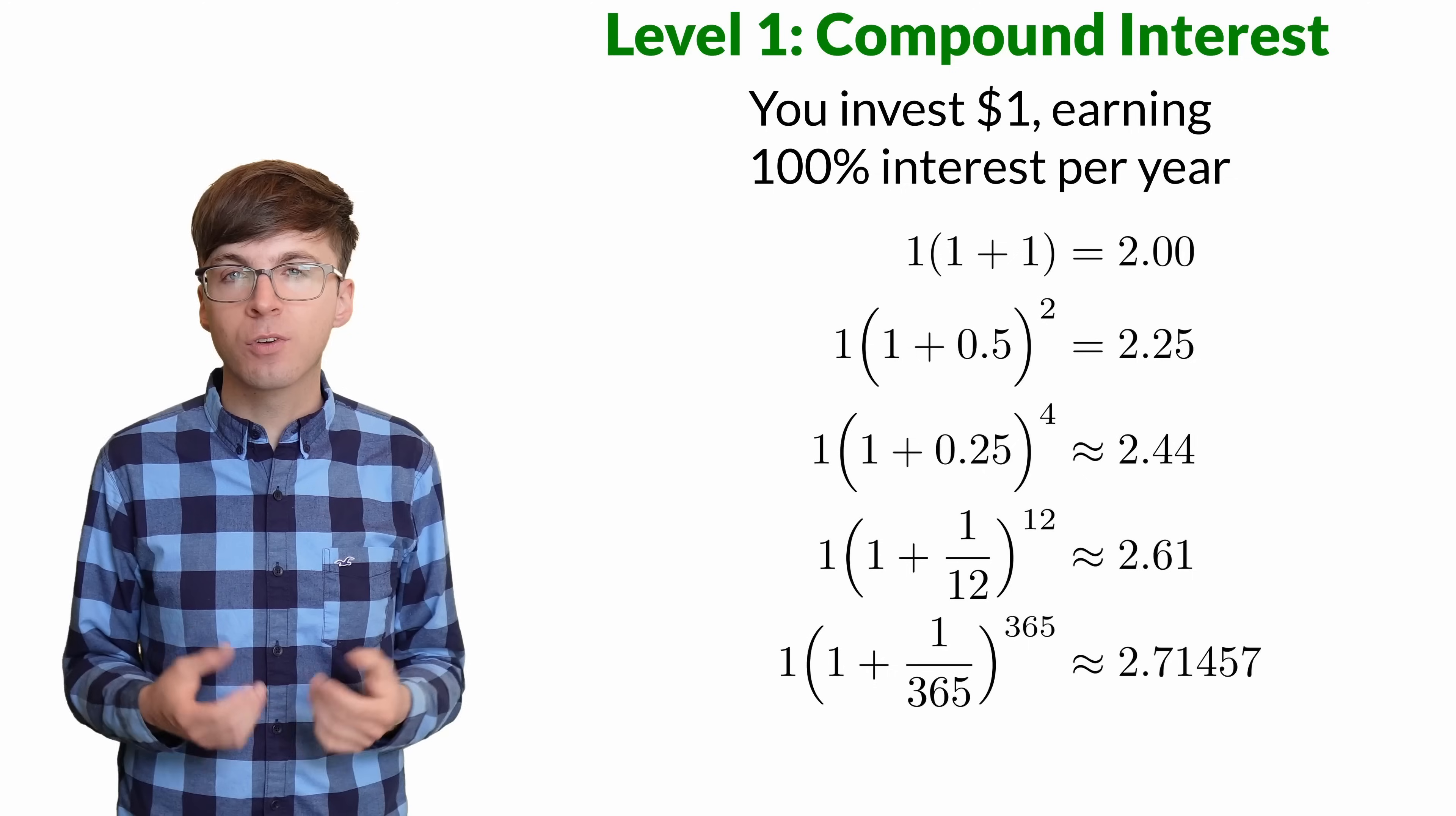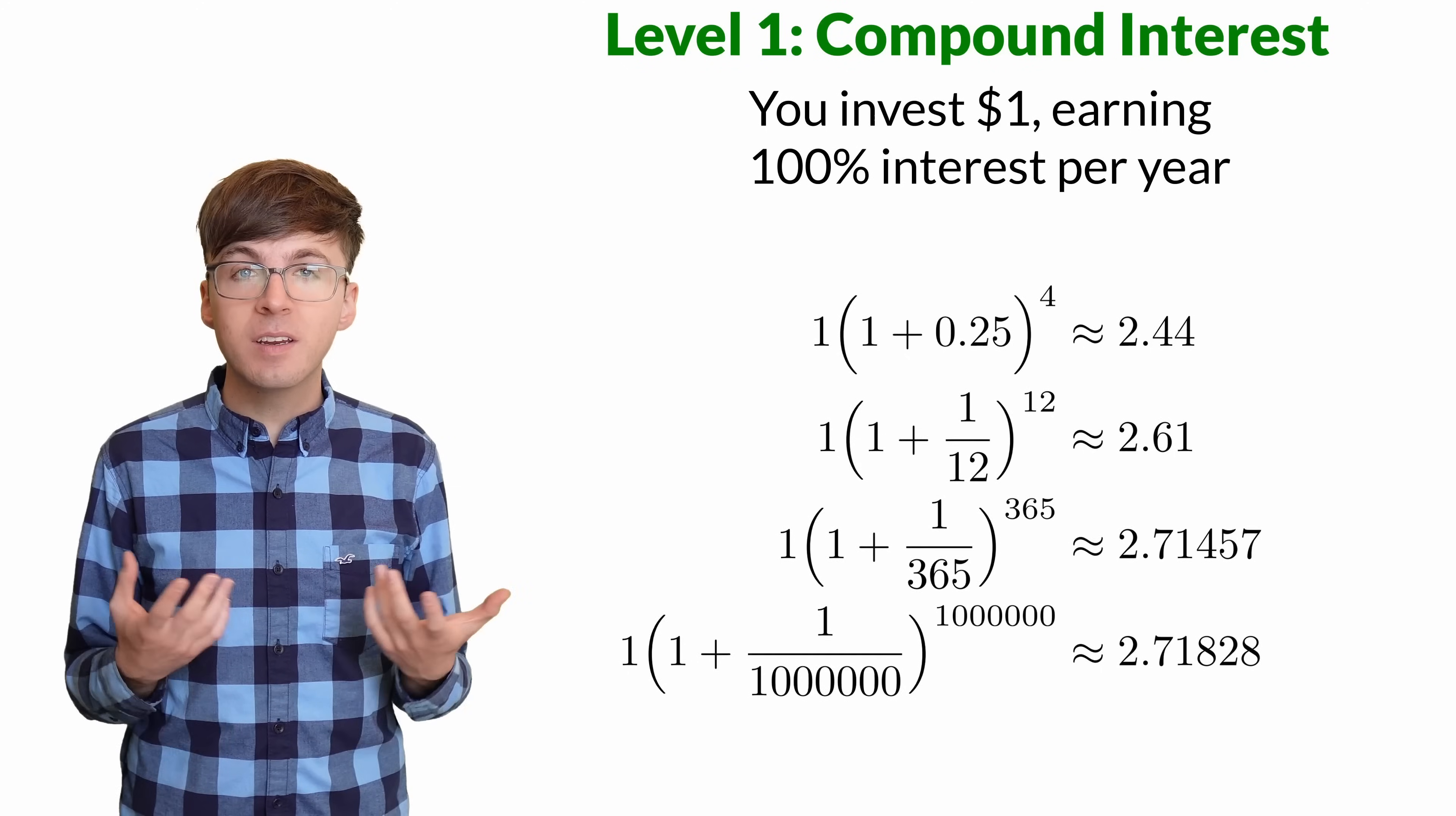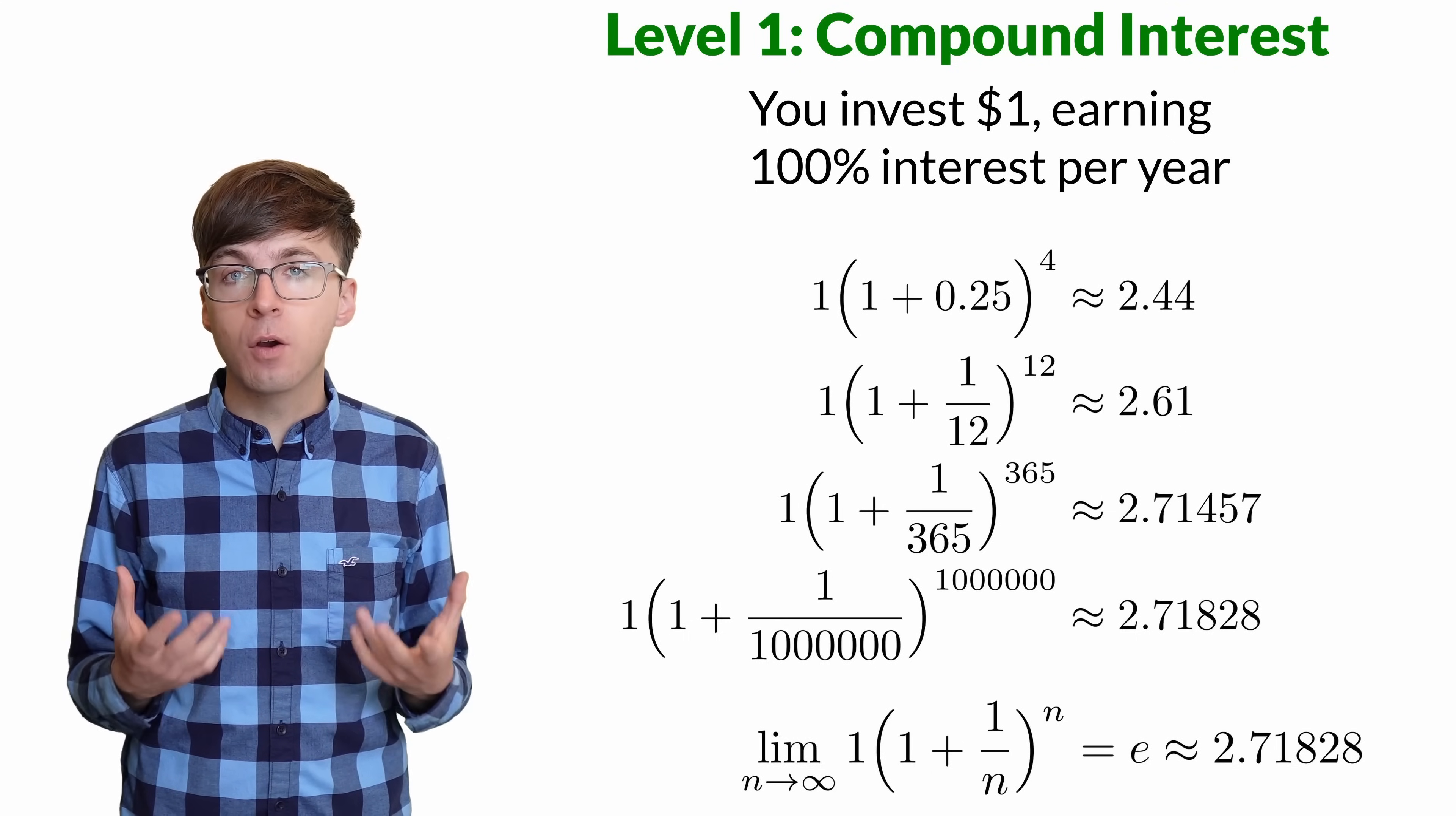We notice there's diminishing returns after a while. Switching from yearly to quarterly or monthly makes a significant difference, but going from daily to millions of times per year barely makes a difference at all. In the limit as n approaches infinity, this quantity converges to the number e, about 2.71828. E represents the ending balance of an account that started with $1 that gained 100% interest compounded continuously over the year.